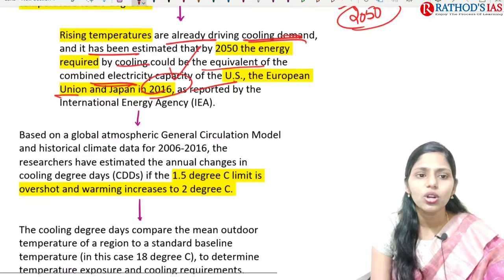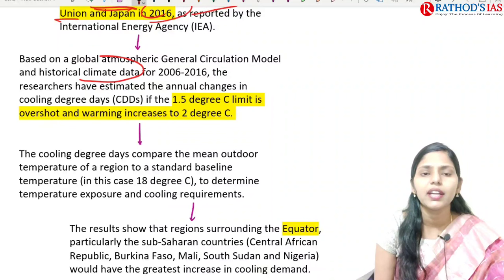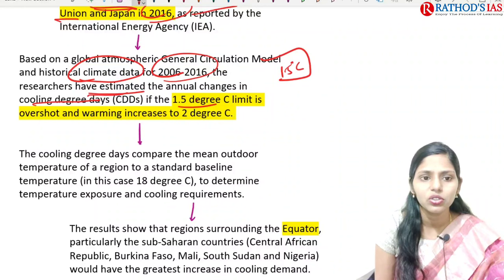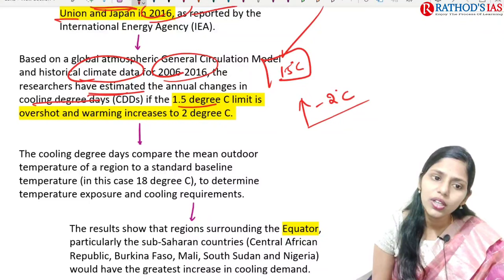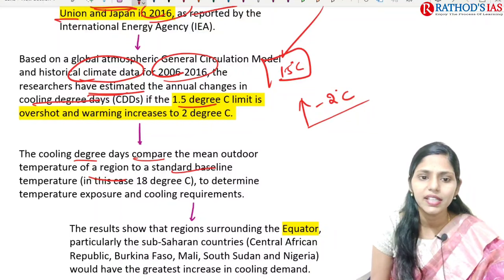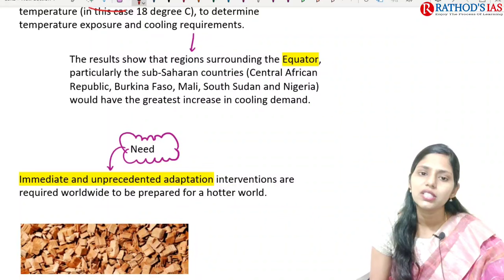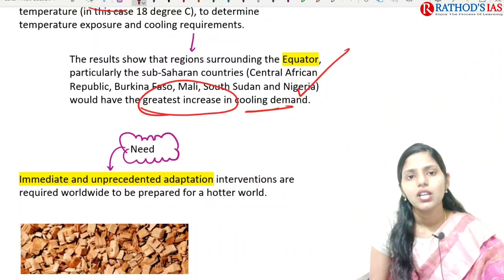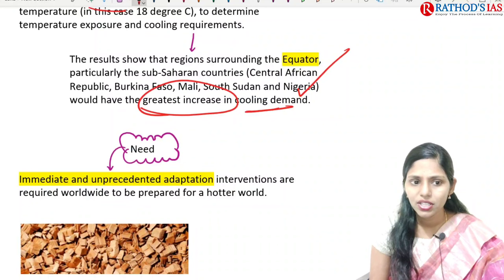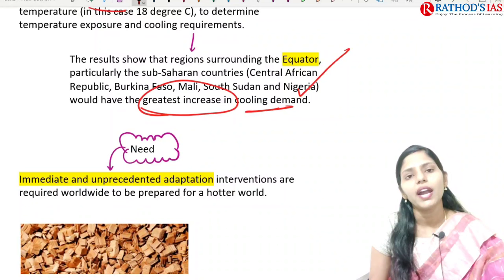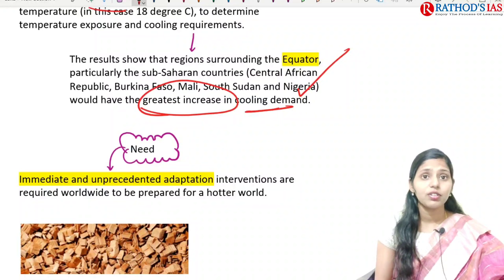Based on global atmospheric general circulation model and historical climate data for 2006–2016, researchers estimated annual changes in cooling degree days if the 1.5°C limit is overshot and warming reaches 2°C. Regions surrounding the equator and sub-Saharan countries like Central African Republic, Burkina Faso, Mali, South Sudan, and Nigeria would have the greatest increase in cooling demand. Immediate and unprecedented adaptation interventions are required worldwide to prepare for a hotter world, and policies addressing global warming are very important.